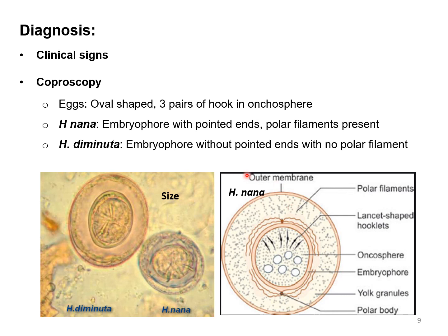The polar body and polar filaments are only present in Hymenolepis nana and absent in Hymenolepis diminuta. In practice, it is really difficult to see these structures under the microscope, so decisions are based on size and shape. While both eggs are oval, the eggs of H. nana are smaller — almost half the size — compared to the eggs of H. diminuta.